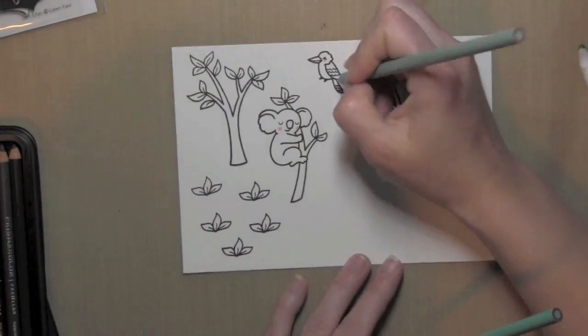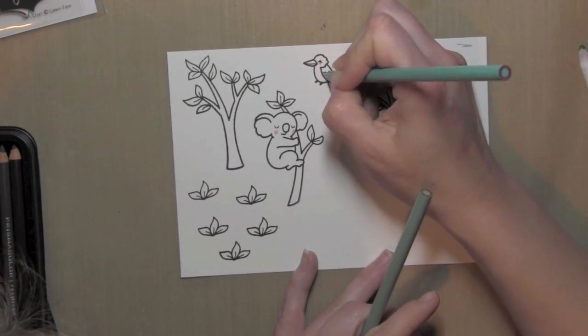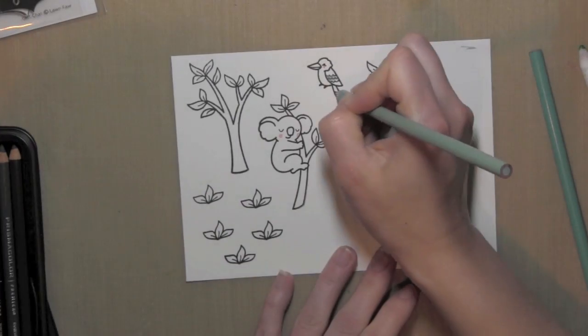To start my card I've stamped several of the images from the Critters Down Under stamp set and I'm coloring them in with colored pencils.